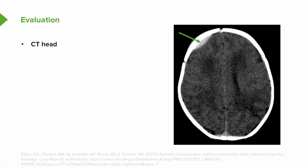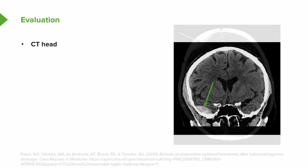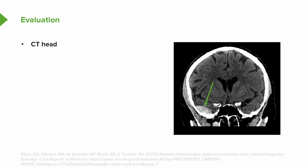Here we see a non-contrast head CT demonstrating a lens-shaped hyperdensity, consistent with an epidural hematoma. Alternatively, we may want to look in different planes, and here we're looking at a coronal CT demonstrating a similar lens-shaped deformity in the inferior temporal lobe, also consistent with an epidural hematoma.